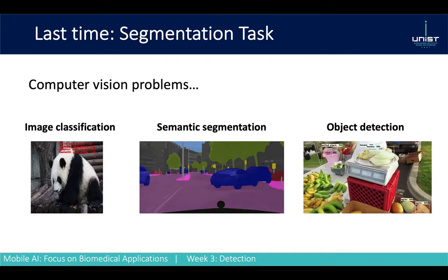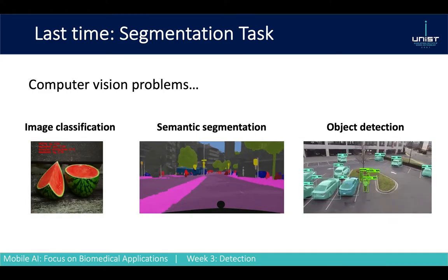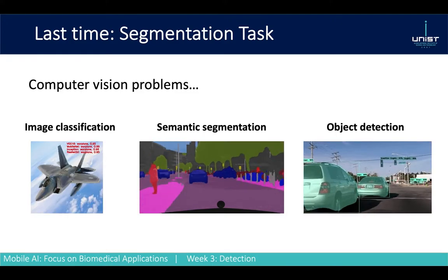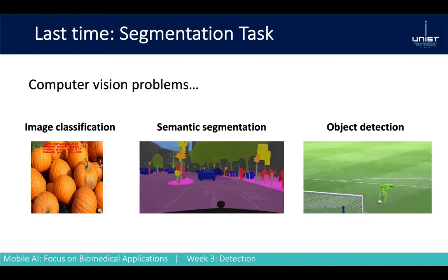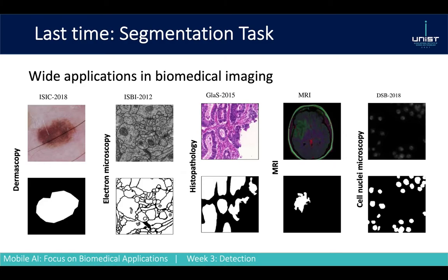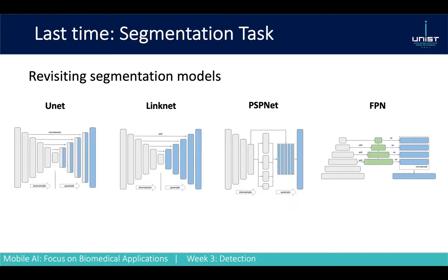Last time we briefly mentioned what kind of tasks are of our interest. The first one shows classification, the second one semantic segmentation. And today we will move on to a more interesting task, which is object detection. Also last time we showed that segmentation has wide applications in biomedical imaging — dermatology, microscopy, histopathology — problems some of you are already acquainted with during your research work.